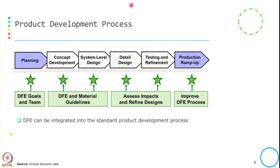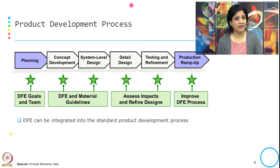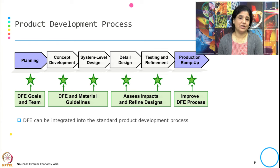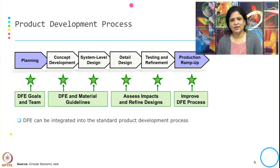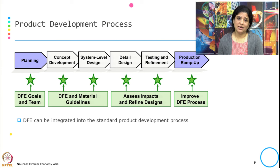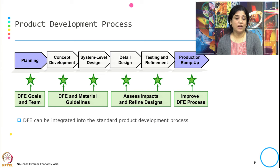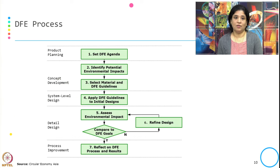This is the product development process. It starts from planning to concept development, system level design, detail design, testing and refinement, and production ramp-up. The role of DfE gets mapped into each stage of the product development process. In planning, mostly with DfE goals and team. In concept development and system level design, DfE and material guidelines can be given. In detail design and testing and refinement, we can assess the impact and refine the designs. In production ramp-up, we typically improve the DfE process. So DfE can be integrated into the standard product development process.